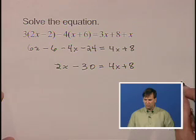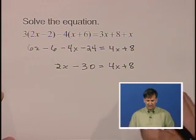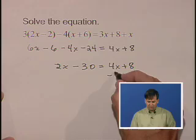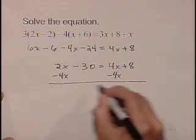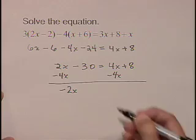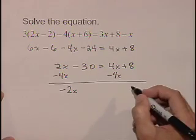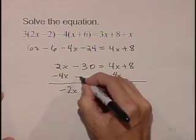Now we have to collect all the x's to one side and all the numbers to the other. So we are going to subtract 4x from each side so that we have minus 2x. And to move all the numbers to the other side, we are going to add 30 to each side.